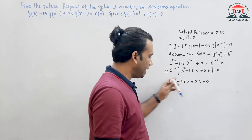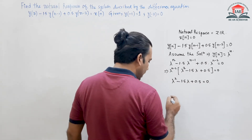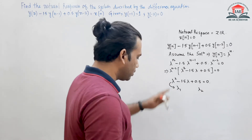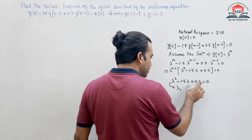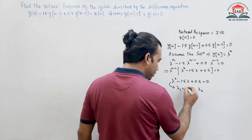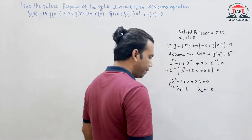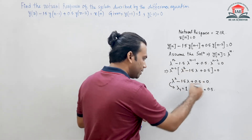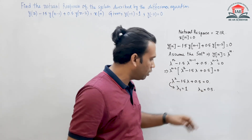Solving this characteristic equation by factorization — basic high school mathematics — we get two roots: λ1 = 1 and λ2 = 0.5. We can write this as (λ - 1)(λ - 0.5) = 0. We have two roots, so the order of the system is 2.